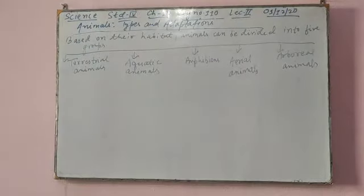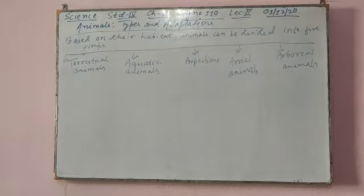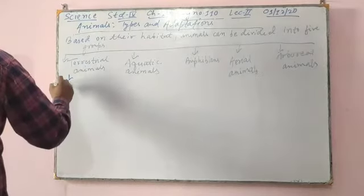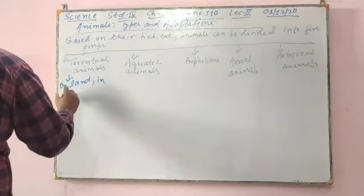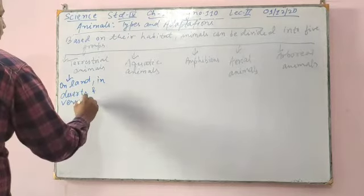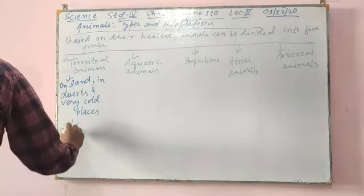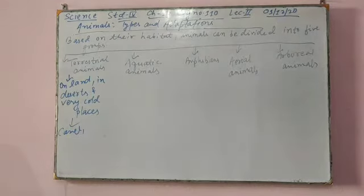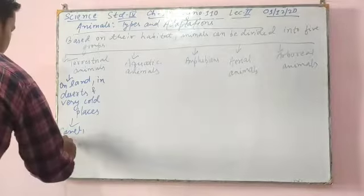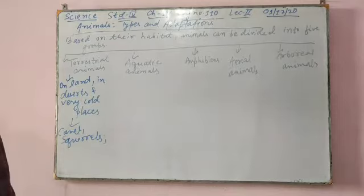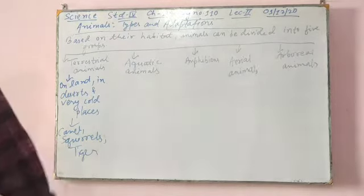So based on their habitat, animals can be divided into five groups. Animals who live on land, in deserts, and in very cold places are called terrestrial animals. Examples include camels, squirrels, and tigers.